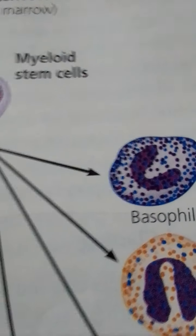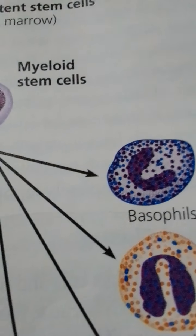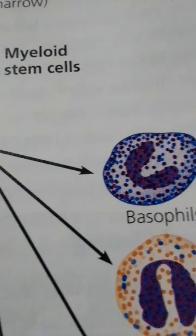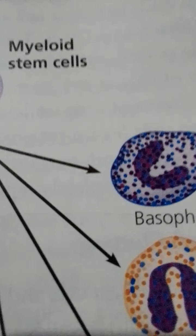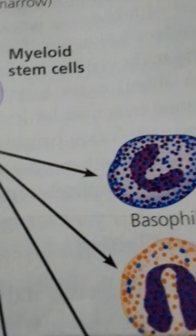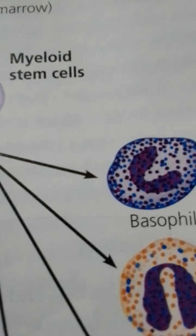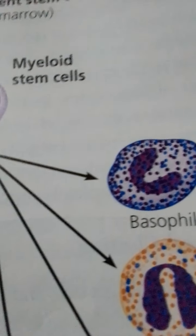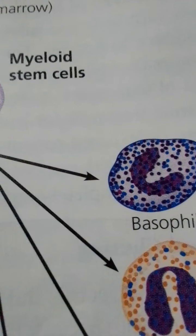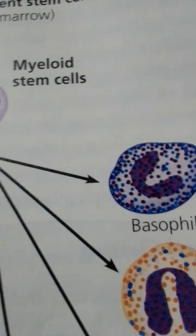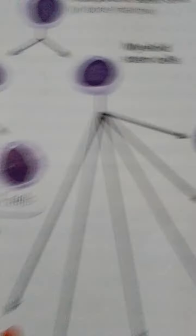Platelets, the third cellular element of blood, are fragments of cells about two to three micrometers in diameter. They have no nuclei and originate as pinched-off cytoplasmic fragments of large cells in the bone marrow. Platelets then enter the blood and function in the important process of blood clotting.